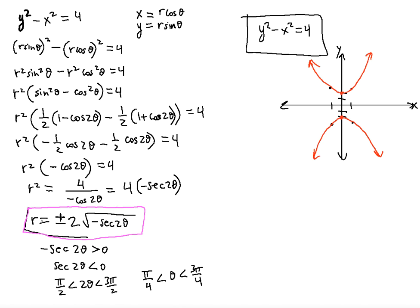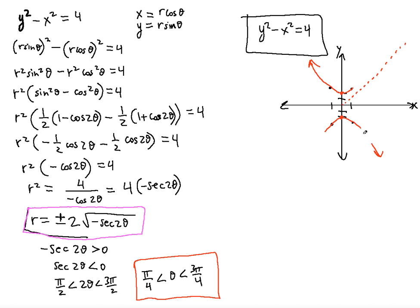Now let's understand why the polar equation includes plus and minus 2 radical negative secant 2 theta. Remember the constraint that theta runs from pi over 4 to 3 pi over 4. These boundary angles correspond to asymptotic lines — the hyperbola approaches these lines but never touches them.